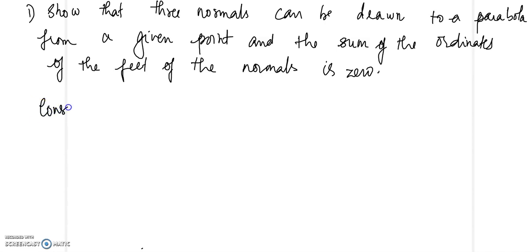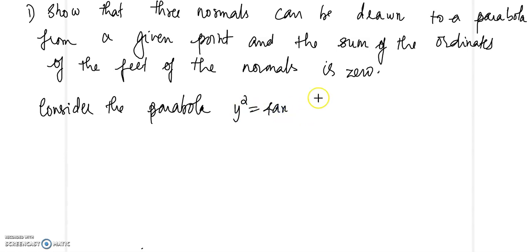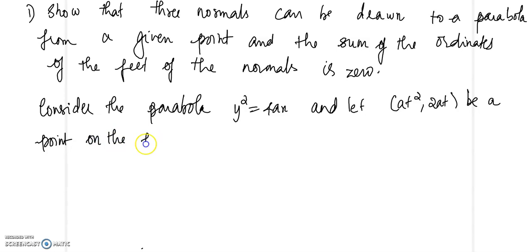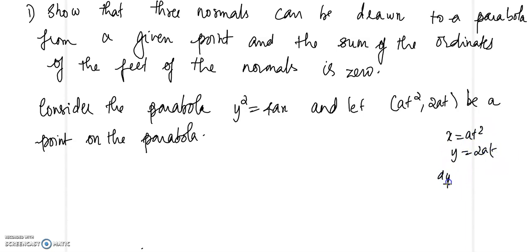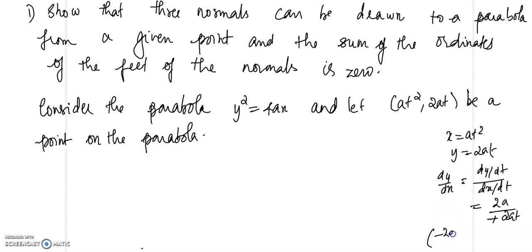Let us consider the parabola y squared equal to 4ax in parametric form, where a point on the parabola is (at², 2at). Then dy/dx equals dy/dt divided by dx/dt, which gives 2a over 2at, so the slope of the normal is equal to minus t.